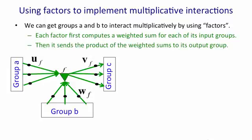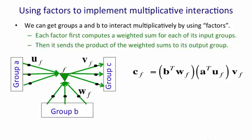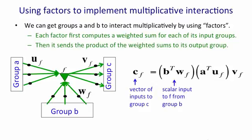And we use that scalar to scale the outgoing weights V in order to provide input for group C. So the input of group C is just the product of the two numbers that come into the two vertices of the triangle times the outgoing weight vector V. We can write that as an equation. The input that factor F provides to group C, so its vector input to group C, is a scalar input to F from group B that's got by multiplying the state of group B by the weights W, F. We then take the product of those two scalars and multiply the weight vector V, F by that. And that's the input that the factor gives to group C. Then, of course, we're going to have a whole bunch of those factors.